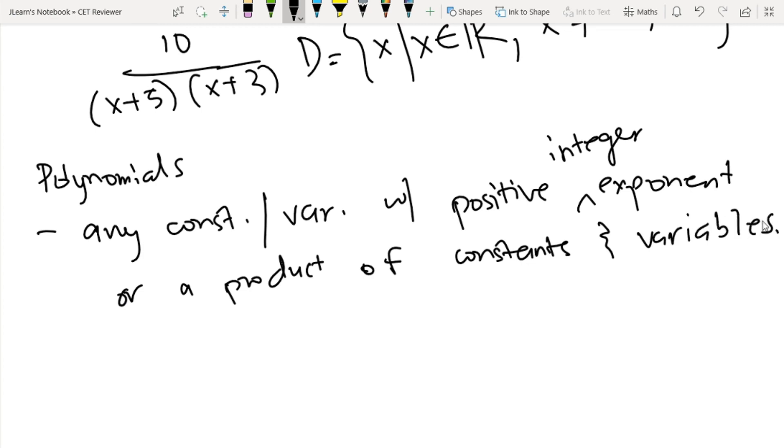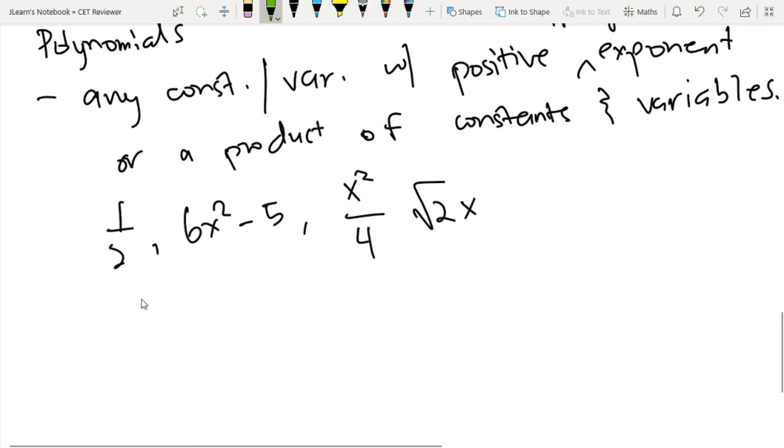So for example one-half, polynomial yan kasi constant siya. So kunyari 6x² minus 5, polynomial din yan kasi you have an integer exponent nang variable. So pwede mo rin sabihin na x² over 4. You can also say square root of 2x, polynomial din yan. Yung mga hindi polynomials...